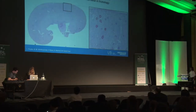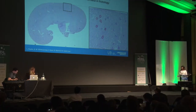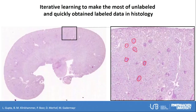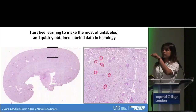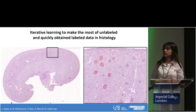The next spotlight is by Lakshmi Kupta on iterative learning to make the most of labelled data and quickly obtained labelled data in histology. I'm Lakshmi and my interest is in kidney histopathology. The image on the left shows kidney tissue, and I'm trying to segment glomeruli — these circled in red objects that you see.